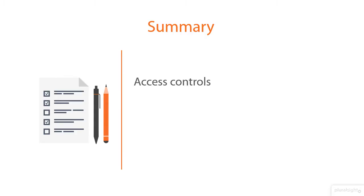In this module, we reviewed various access controls such as locks, safes, vaults, and alarm systems. We have discussed various lock bypass techniques and should by now understand that locks are deterrents and delay mechanisms that can be bypassed.